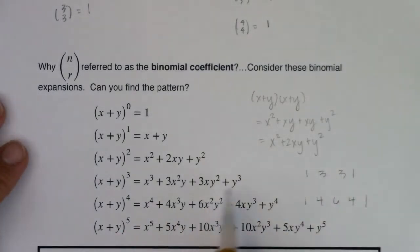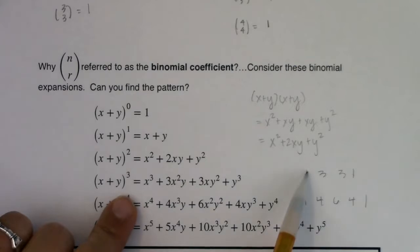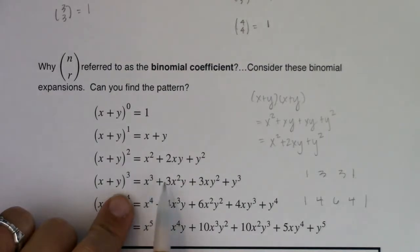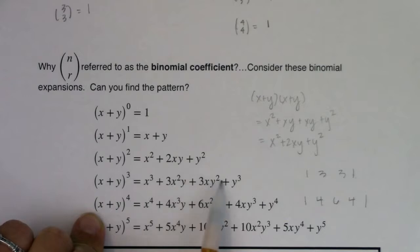1, 3, 3, 1 — do you see that pattern in here? 1, 4, 6, 4, 1 — do you see that pattern in here? Let's be explicit: 1, 3, 3, 1. I want you to see that it's the coefficients — that's why this is the binomial coefficient. The coefficient here is 1, 3, 3, and then 1. These are binomial coefficients: this is a binomial, we expanded it, and those are the coefficients in front of those terms.